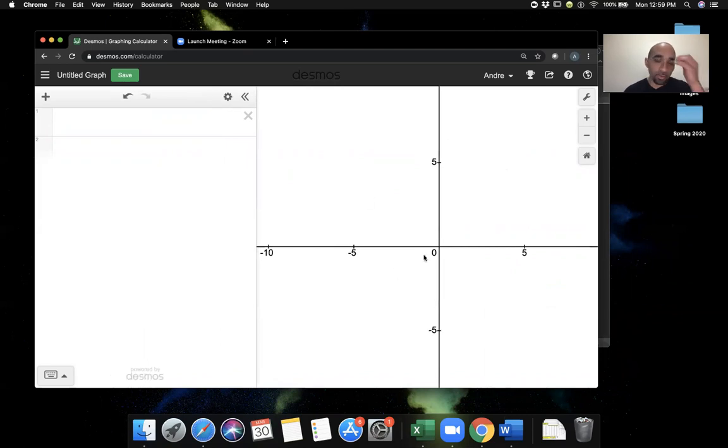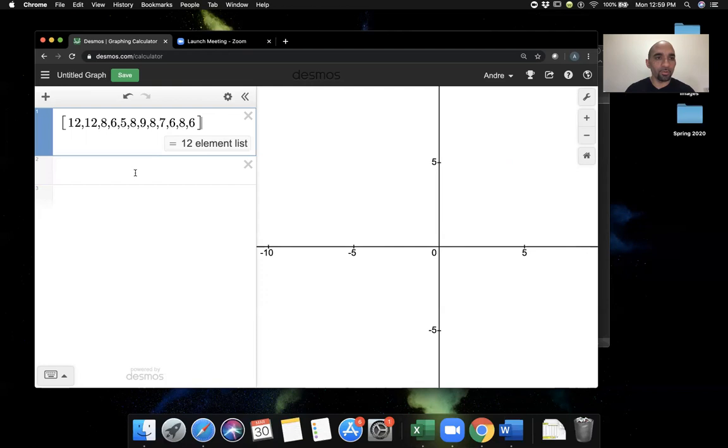You have the graphing window here and the command lines over here. I'm going to first paste in with Ctrl+V—I pasted in those numbers that I copied from the Word document. I'm going to put square brackets around this list. That automatically creates a list of 12 items. I'm going to name this list, so I'll click at the beginning and say capital A equals. So this is a 12-element list named A.